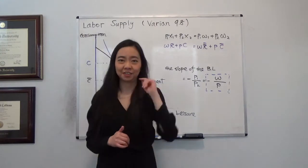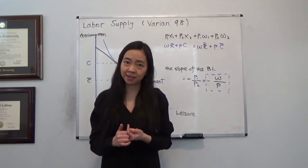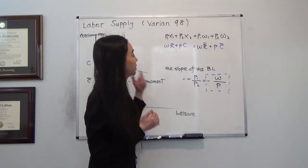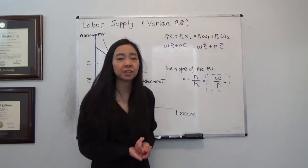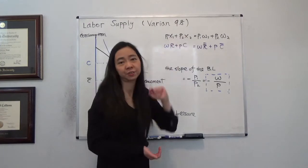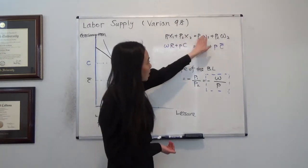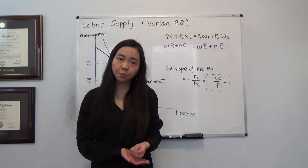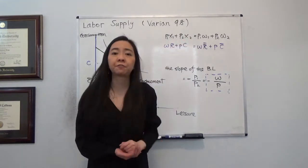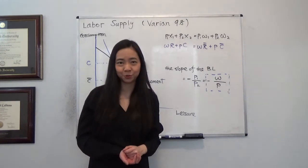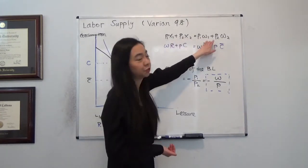Now notice that in the beginning of chapter 9, buying and selling, we learned that the value of our initial endowment has to be equal to the value of our final consumption. Here, ω₁ and ω₂ stand for the initial endowment of good 1 and good 2, and x₁ and x₂ stand for the final consumption of good 1 and good 2, and the value have to be equal.